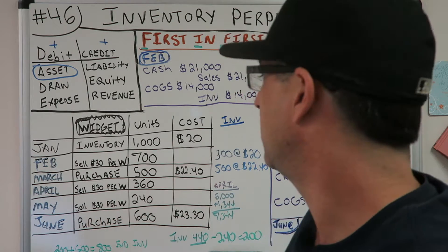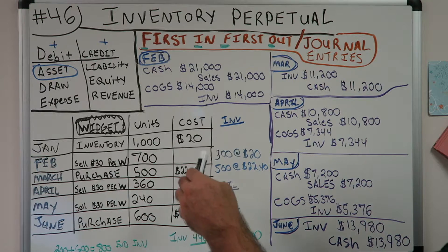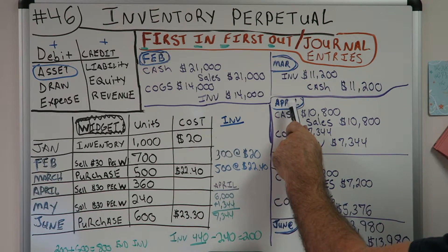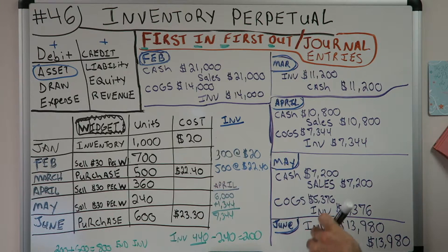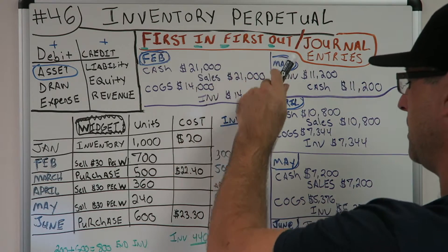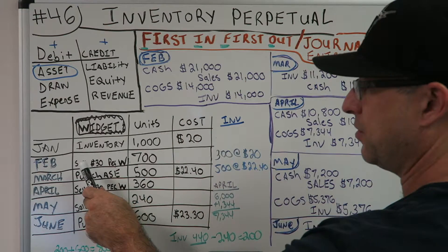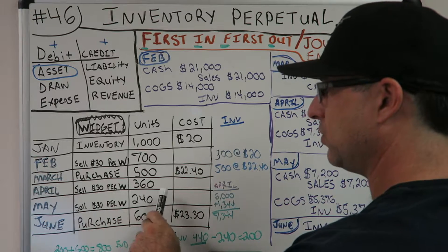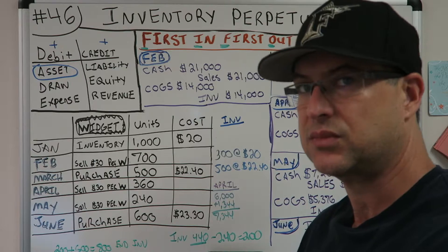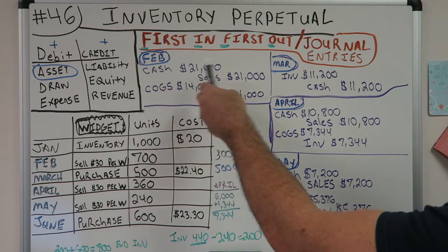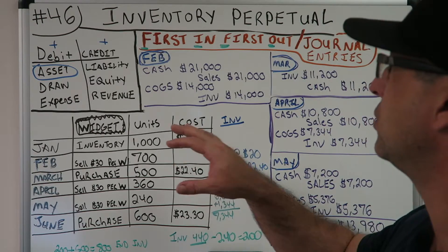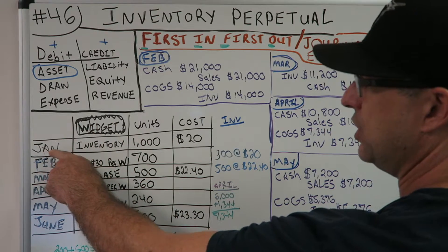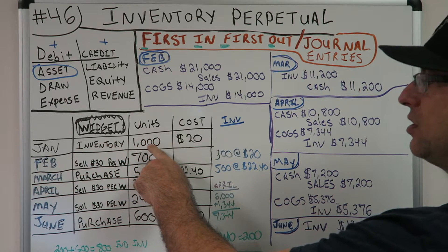Let's look over this for a second. We have two journal entries in February, two in April, two in May. What's happening? In February, April, and May we're selling widgets. In a perpetual inventory system, whenever we sell widgets we have two journal entries per transaction. Let's get started. In January, you have in your inventory a thousand widgets that cost $20.